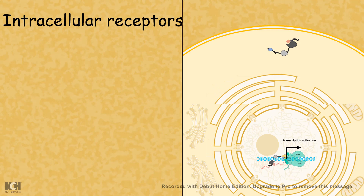Hi! In this video we would look at intracellular receptors. We have already seen receptors displayed on the cell surface and how they work in this entire cell signaling playlist. Now we look at a different type of receptor which is known as intracellular receptor.